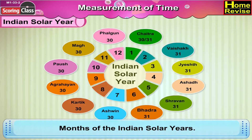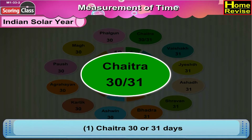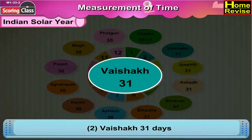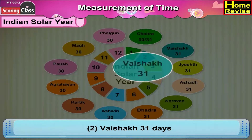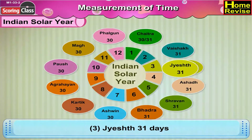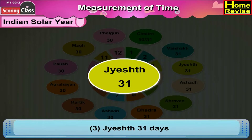The first month is Chetra, which has 30 to 31 days. Next is Veshak, which has 31 days. The third month is Jaesht, which has 31 days.